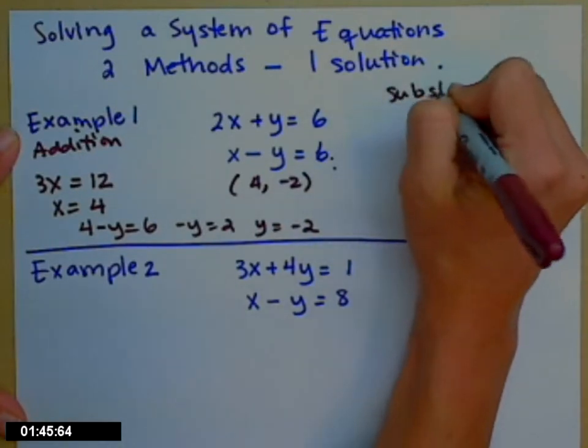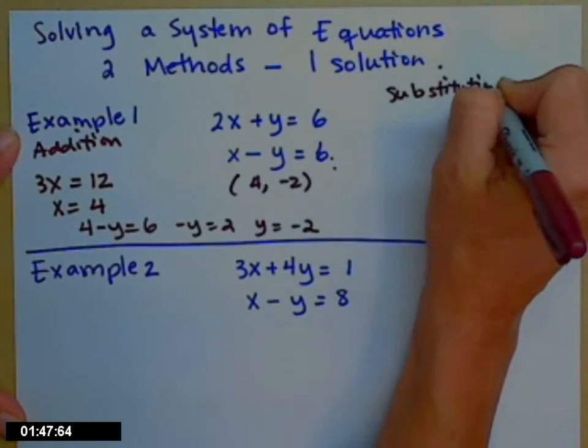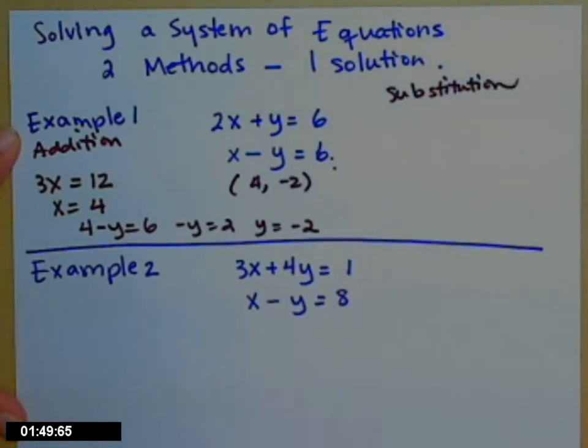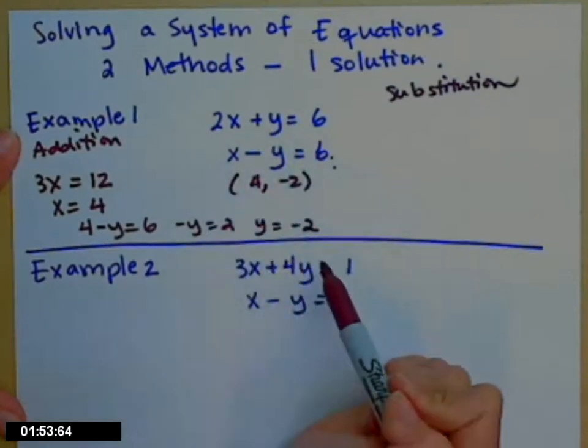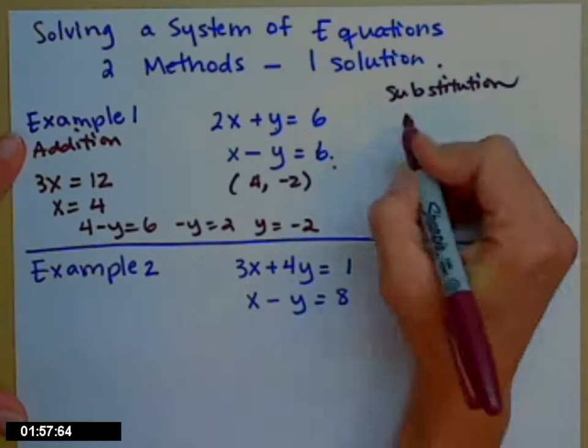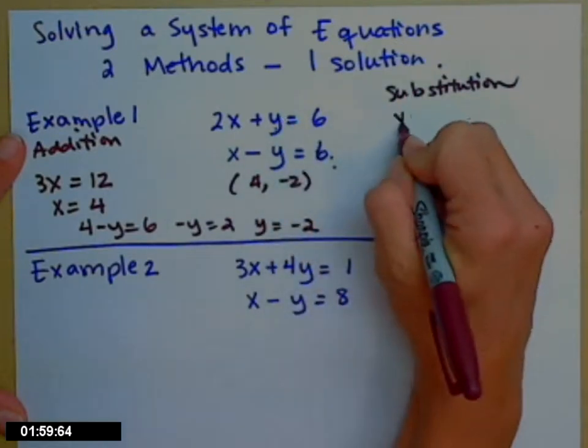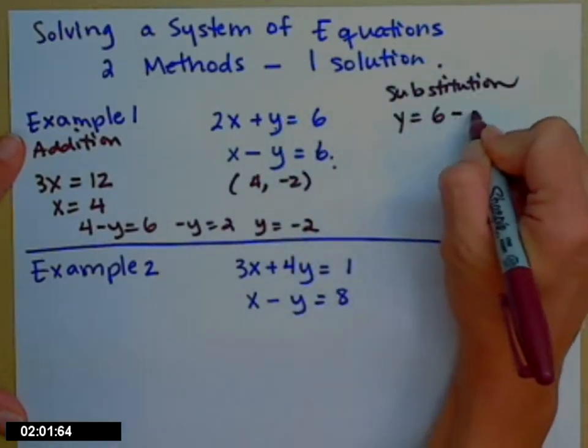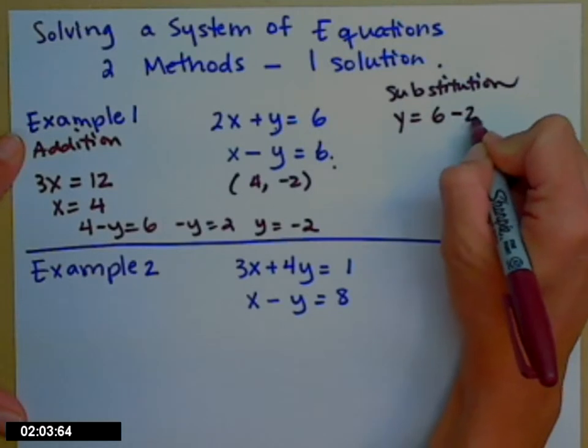The other method is called the substitution method. For that, you need to isolate one of the letters up here, and it doesn't matter which one. I'm going to choose y from the top one. So if I solve for y in the top equation, y equals 6 minus 2x.